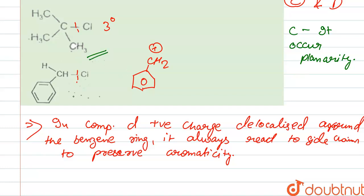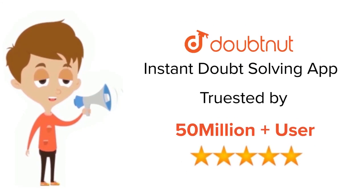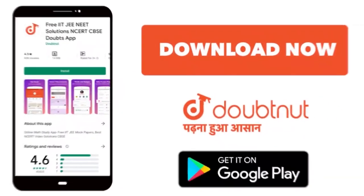So this tertiary compound is more stable than benzyl carbocation. Our correct option is option C. Thank you. For class 6-12, IIT-JEE and NEET level, trusted by more than 5 crore students, download Doubtnet app today.